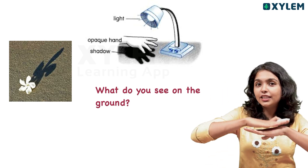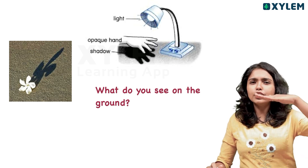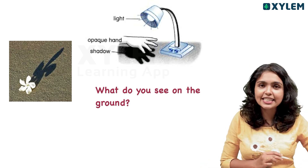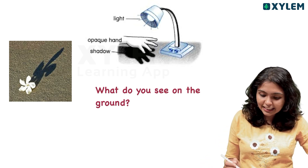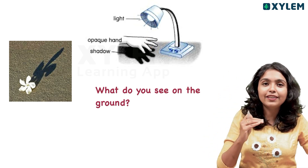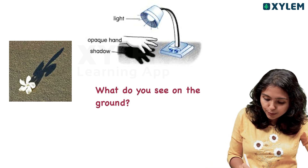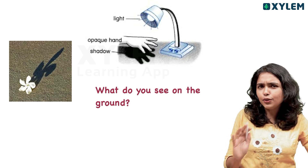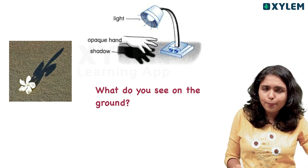The table lamp gives off light. When you place your hand in front of it, the light is blocked by your hand. That is why you see a shadow. We put a shadow on the ground. In this figure, you can create a shadow. It is an opaque object.